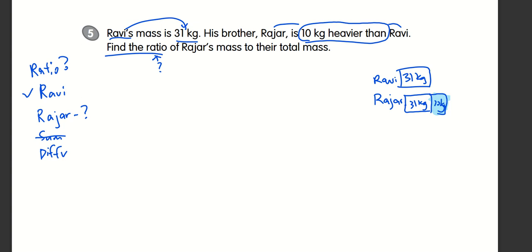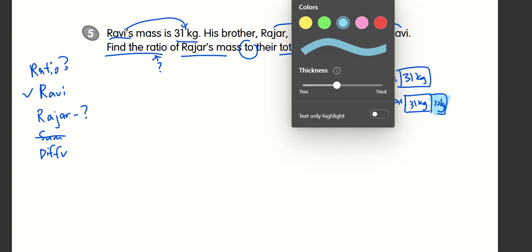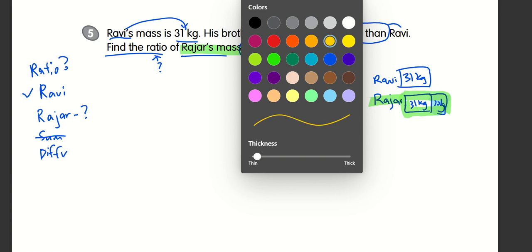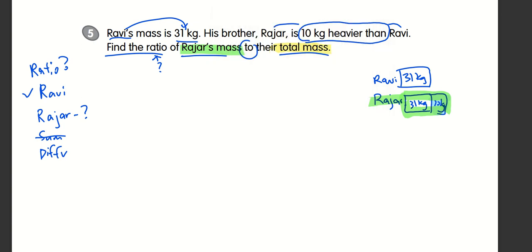And the ratio asks for Raja's mass to their total mass. So we are looking at Raja's mass. That's Raja. That's this total here. To the total mass. That's Raja here. The Raja is the green. And total is here.